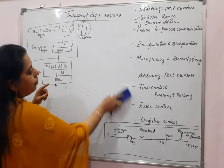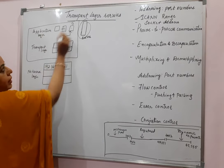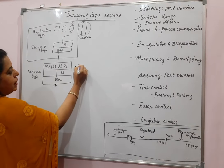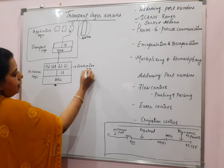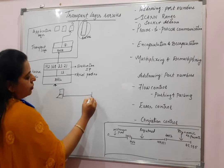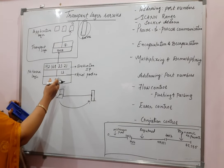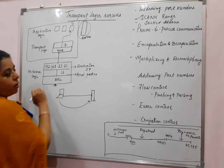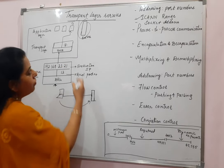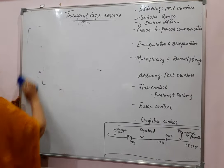The port number identifies the process at the application layer. At the server side, the destination IP address identifies the server host, and the destination port number identifies the specific process. A message or request coming from the client to the server requires both: to identify the process you require the port number — a well-known port number here — and to identify the server host you require the destination IP address. To summarize, I'll give you an analogy to understand port numbers and destination addressing.